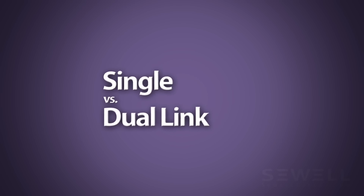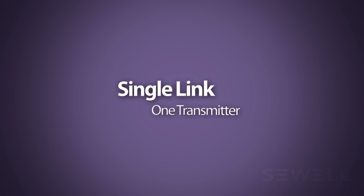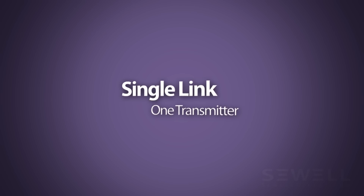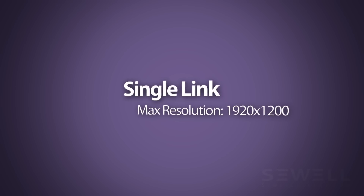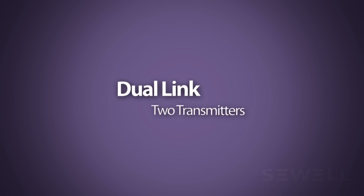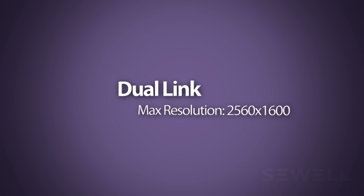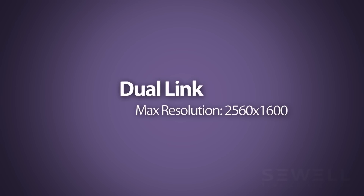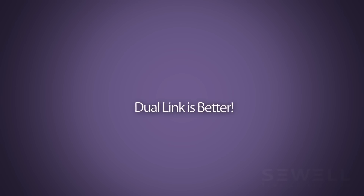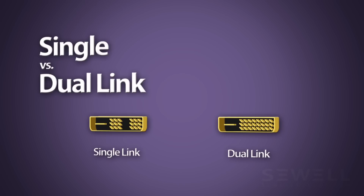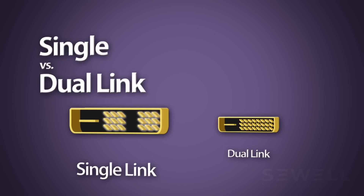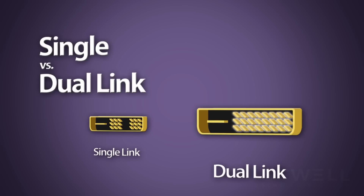So what's the difference between single link and dual link? To keep it simple, single link connections use only one signal transmitter and can handle resolutions up to 1920 by 1200, while dual link uses two transmitters allowing resolutions of 2560 by 1600 — in other words, dual link is better. Single link uses two groups of nine pins, while dual link uses three rows of eight pins.